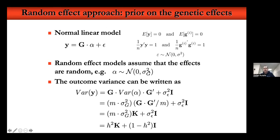It's what's called an empirical Bayes approach, where we don't fix a prior distribution with all its parameters. We fix the distribution shape but use the model to estimate what is the optimal prior parameter that maximizes the data likelihood.